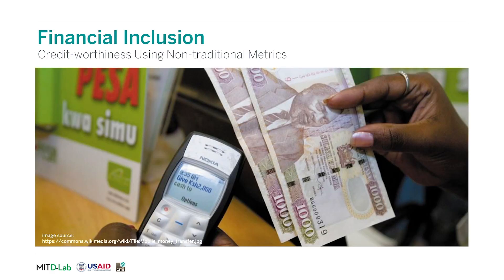In financial inclusion, several organizations are using machine learning to determine credit worthiness of individuals in areas where other formalized credit systems may not be available or accessible. These companies are deploying pay-as-you-go services, ranging from solar lighting systems to agricultural inputs, and are generating and gathering non-traditional data on user assets and repayments. This data can be used to determine credit worthiness using machine learning, enabling individuals to access loans or financing that were otherwise inaccessible.